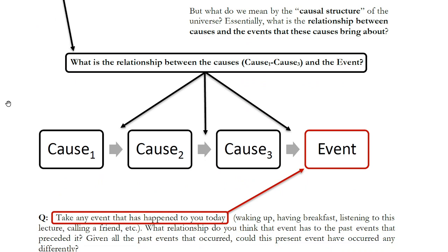Determinism and indeterminism are both about the causal structure of the universe. If you take the moment you're at right now — watching this lecture on your laptop or phone — and ask yourself how you got to this moment, you could list off a long string of causes. You opened the door and sat down; before that you had breakfast; your alarm clock went off; you were brought into existence by your parents, who were brought into existence by their parents. That long chain of causes brought you to where you are at this exact moment.